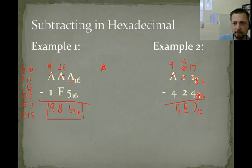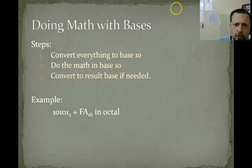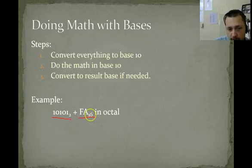Moving on to the next slide. Doing math with bases. Convert everything to base 10. This is going to be the easy way to do it. Do the math in base 10, and then convert your result to... Convert to result base if needed. So if we had to add these two numbers, there is actually a quick way to do that, and I go over that in the chapter. So if you search the chapter text, or if you read through the chapter text, you'll find some tricks to speed this stuff up. But I'm going to do this the slow way.